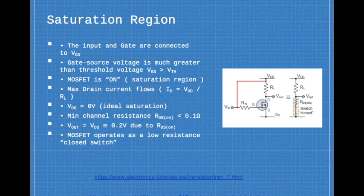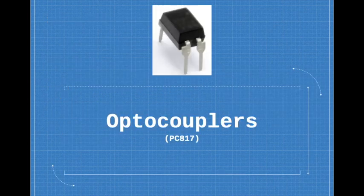In the saturation region, the input and gate are connected to VDD. Gate source voltage is much greater than the threshold voltage, VGS is greater than VTH. MOSFET is on in saturation region. MOSFET operates as an open switch.